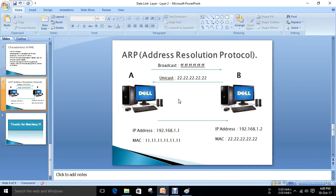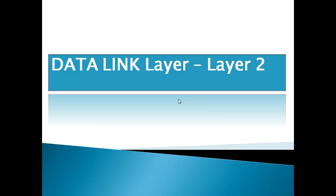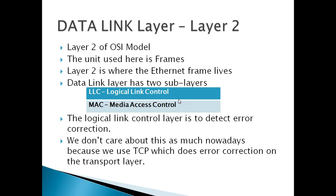Hi all, this is Gautam for pgrspot. In this video we are going to see about the data link layer, which is layer 2 of the OSI model. Let's get into the video. First of all, what is the data link layer? It is layer 2 of the OSI model.